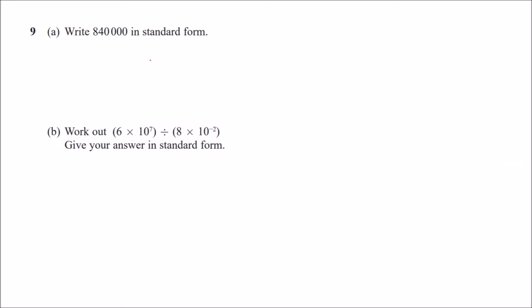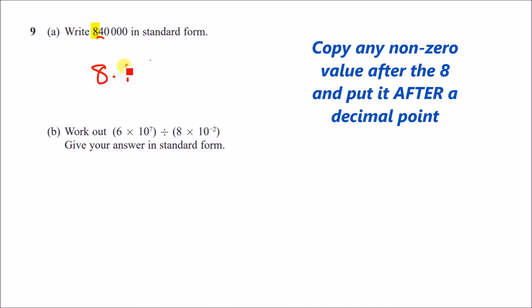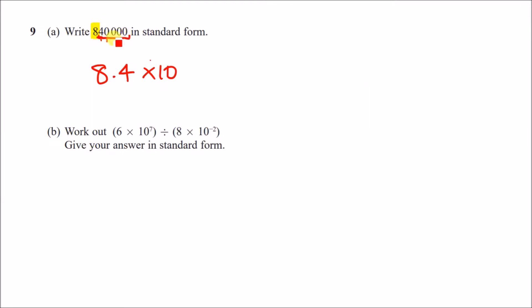Number 9: we need to write 840,000 in standard form. The trick is to always highlight the very first non-zero digit — in this case it's 8. So it'd be 8.4 times 10 to a power, and we just count how many numbers come after the 8: one, two, three, four, five. So it's 8.4 × 10⁵.